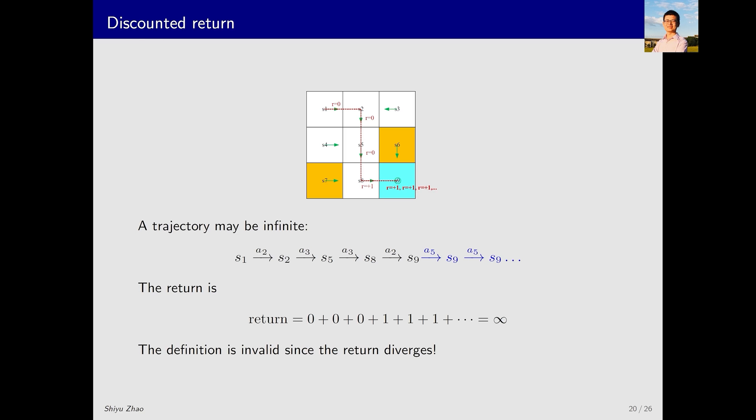Another important concept is discounted return. It is still a return, but it is discounted. What exactly does this mean? Let's look at an example. Previously, we discussed a trajectory that leads to this target. The trajectory we obtained is as this. However, the policy may continue to operate even after reaching the target. Each time the target is reached, a reward of positive 1 is received. This process continues indefinitely, with the action a5 staying still being taken repeatedly at state s9.